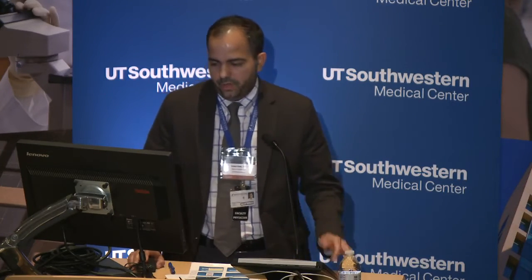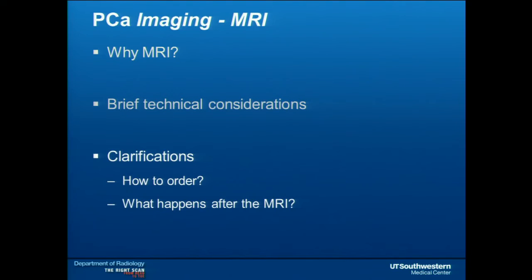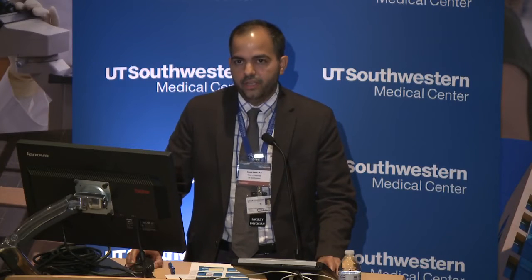Regarding how to order: if you order an MRI of the prostate or an MRI of the pelvis, it's easy for us to figure out what you intend. But to avoid any miscommunication, you would order a multiparametric MRI of the prostate with endorectal coil. Patients will always ask about it, and if you have a chance to discuss this with them beforehand it decreases anxiety, facilitates the process, and shows that everyone is working toward the best option available.